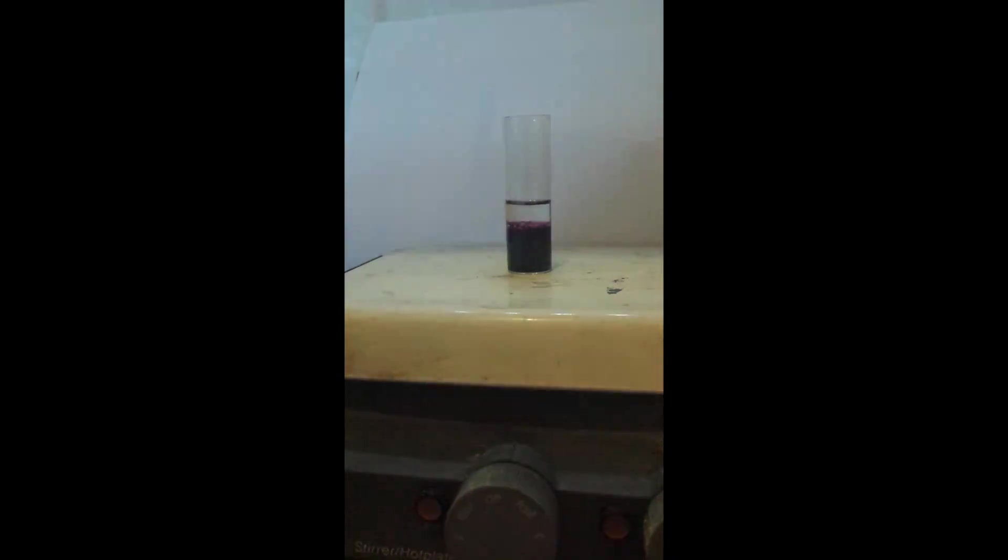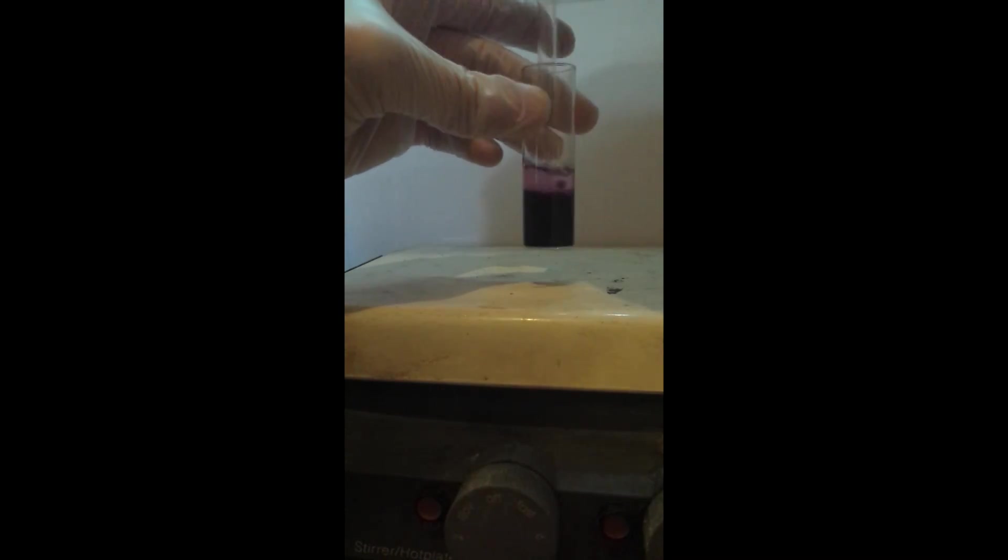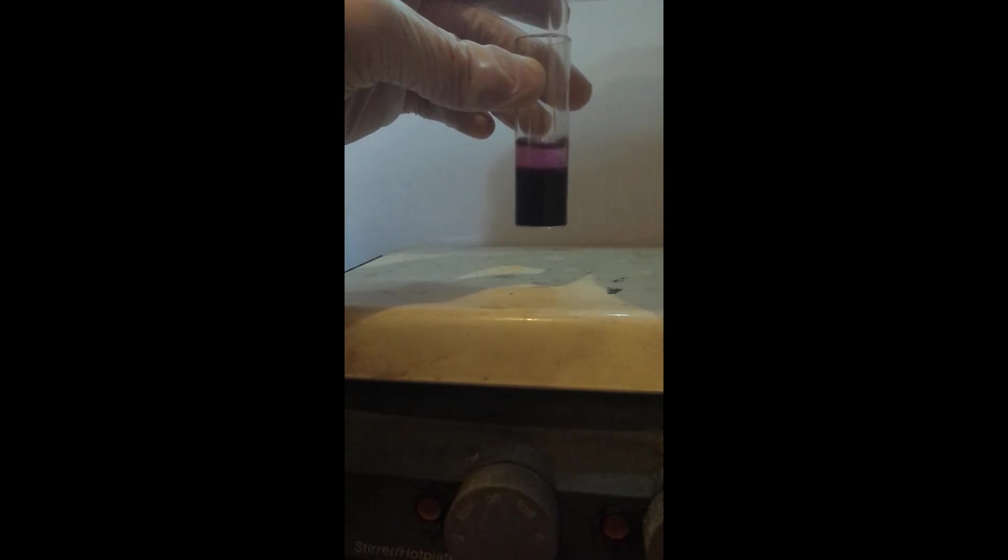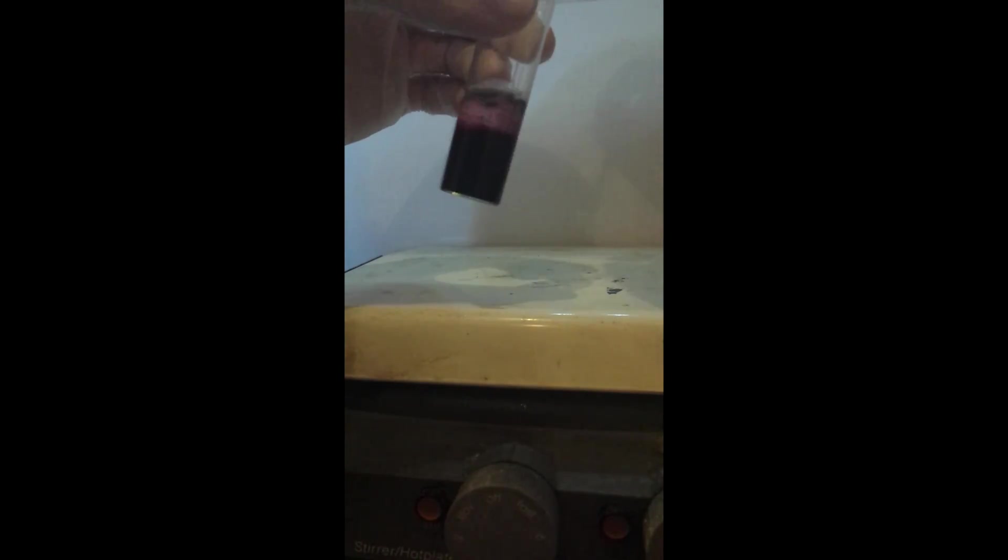Now, I'll add the 18 crown 6 ether to the benzene layer and give it a quick stir. Now, the two layers have the purple color of potassium permanganate.